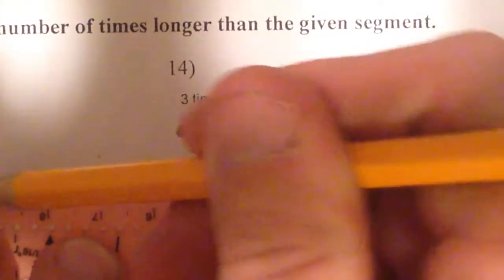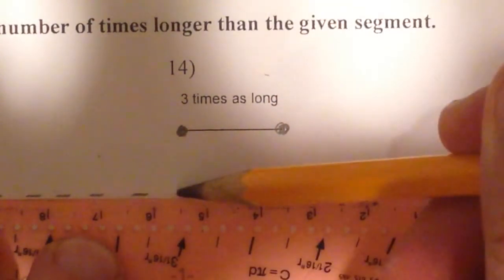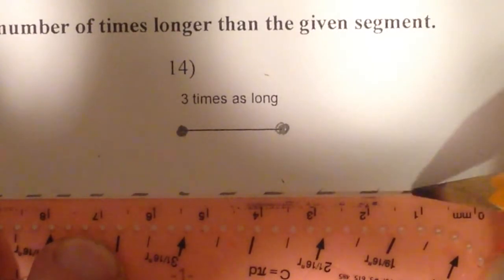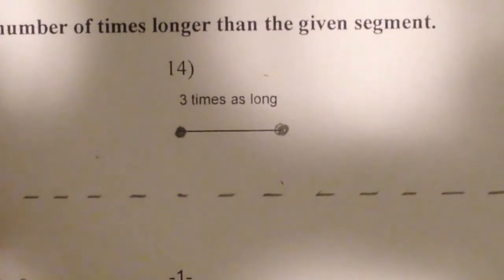I'm going to go ahead and draw myself a nice long line. I like to make the new lines dotted until I actually find the length that I want, so it's a nice long line because I'm not exactly sure how long three times as much would be, but I'm pretty sure I could fit it on there.